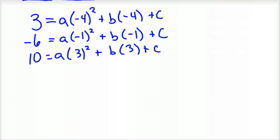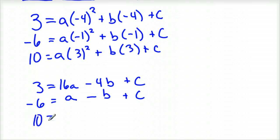So the top equation, I'll rewrite that here, would be 3 equals negative four squared is 16, so that'd be 16a, and then minus 4b plus c. Your second equation would be negative six equals 1a, so I'll just leave it a, because negative one squared is one, minus b plus c. And your third equation is 10 equals 9a plus 3b plus c.